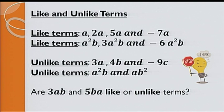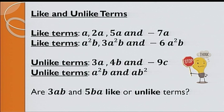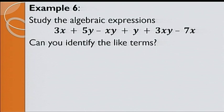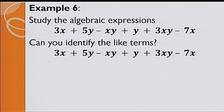Let's have an example. Study the algebraic expressions below: 3x plus 5y minus xy plus y plus 3xy minus 7x. Can you identify the like terms? Now, in this algebraic expression, we have 3x and minus 7x which are like terms. Next, we have 5y and y which are like terms. And finally, we have minus xy and 3xy as like terms. Here is an exercise for you to practice.